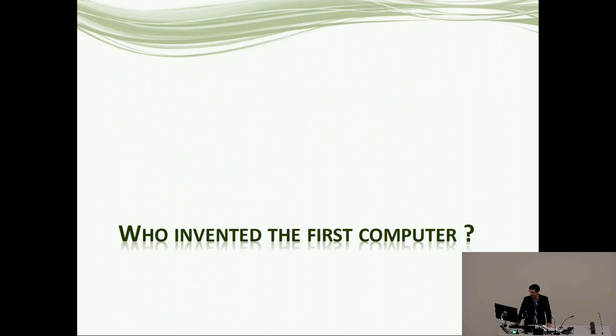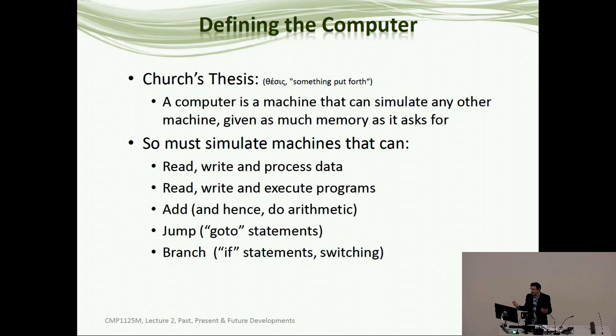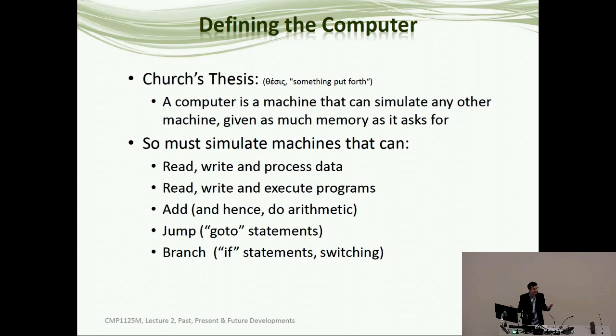Let's begin by attempting some kind of definition of what we're looking for. Last week I was a little touchy about giving formal definitions of computers. As a working definition, I'm going to give you Church's thesis. A thesis is not a fact — it's a view or an opinion, something put forth for discussion and debate. It's generally used as the working definition of a computer by most modern computer scientists. Church's thesis is that a computer is a machine that can simulate any other machine, if you give it as much memory as it asks for.